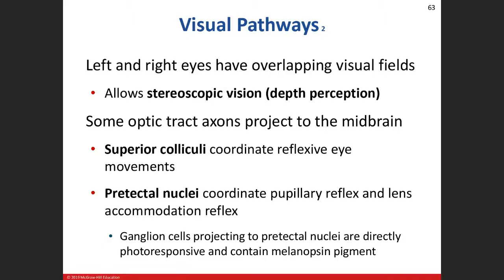When talking about these visual pathways, one important element is that we have binocular vision — two eyes, each seeing their own separate image. But they actually overlap those images, and when we do that, that's stereoscopic vision, and that's where we get depth perception. Each eye sees its own image and overlaps those visual fields, providing us with stereoscopic vision and depth perception.